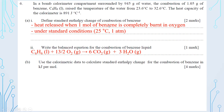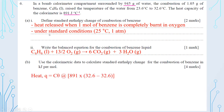For part b, use calorimetric data to calculate the standard enthalpy change of combustion for benzene. Use a three-step method. Note: you are given the heat capacity of the calorimeter as 891 J/°C — since the unit is already J/°C, you do not need to separately multiply in the mass of water. Apply q = CΔT = 891 × (32.6 − 23.6).